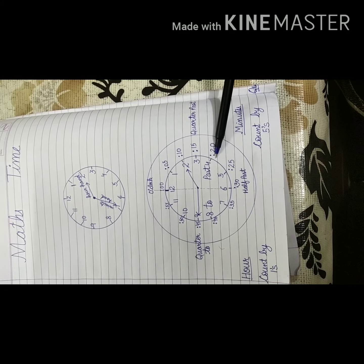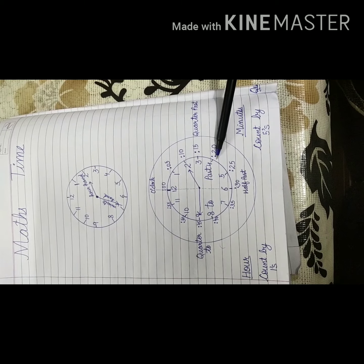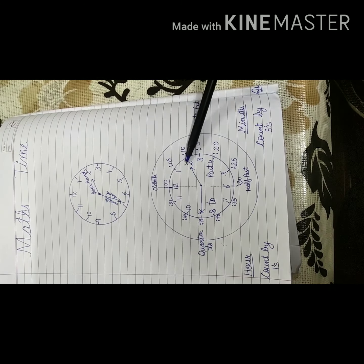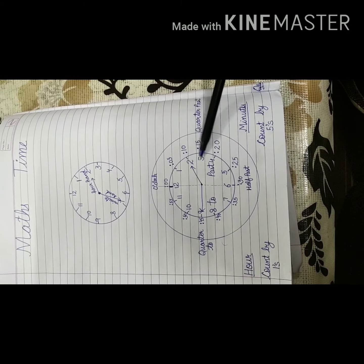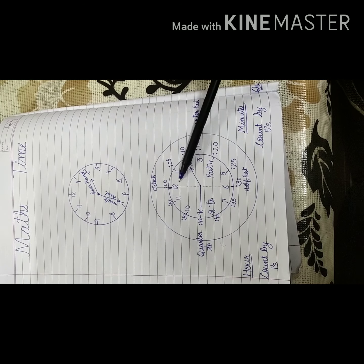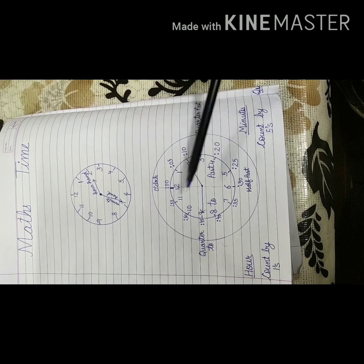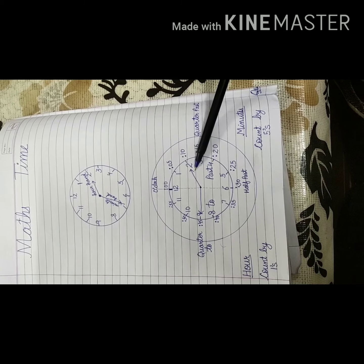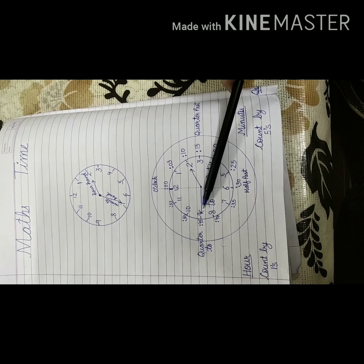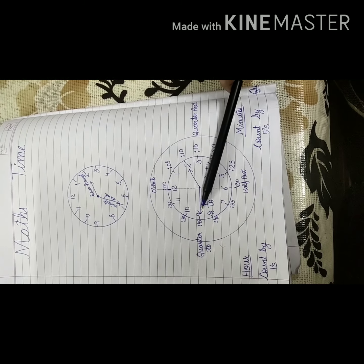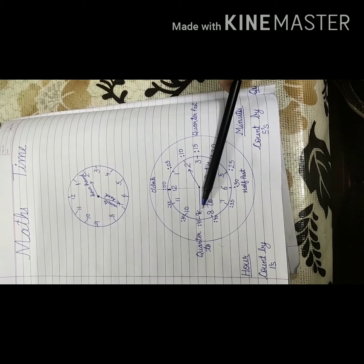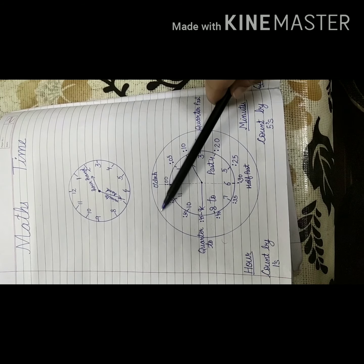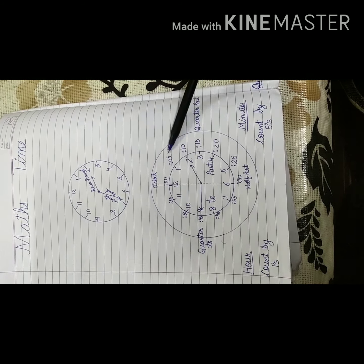First of all, we have to draw the clock. We put the digits — 1, 2, 3 up to 12. Then we draw the hour hand in the middle, the minute hand, and a big circle. You have to draw where you are right now.